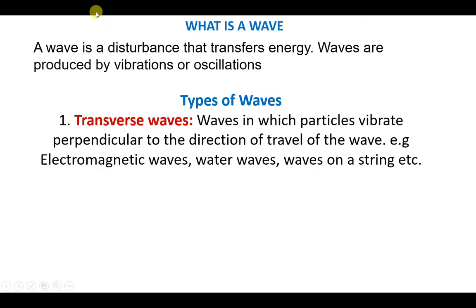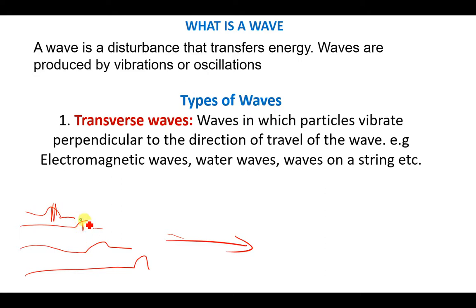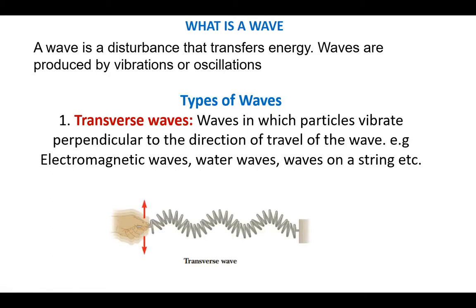If the direction of the wave is going this way — for instance, when you drop something on still water — you discover that a wave forms and keeps moving outward. The particles will be vibrating up and down as the wave travels in this direction. You can see that the particles are vibrating going up, going down, perpendicular to the direction of the wave.